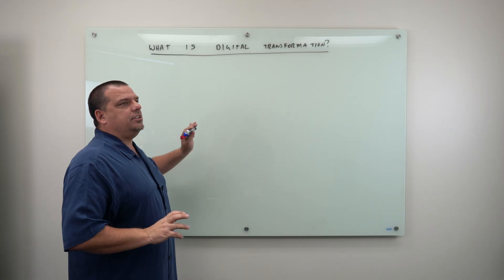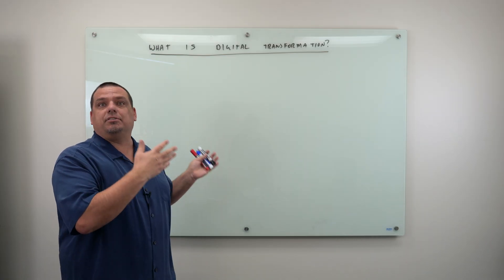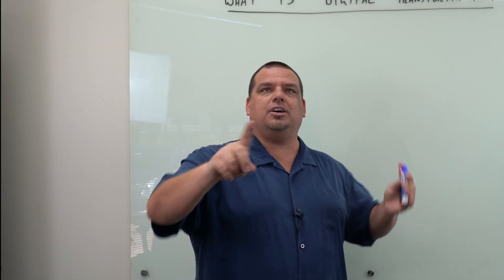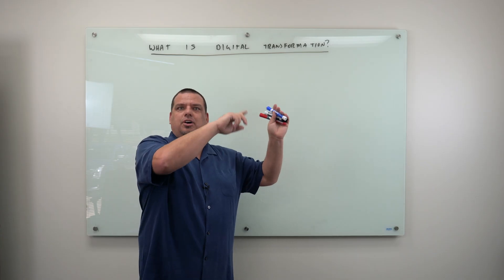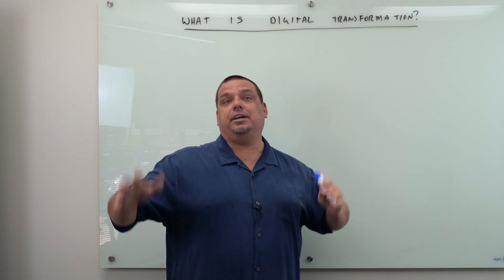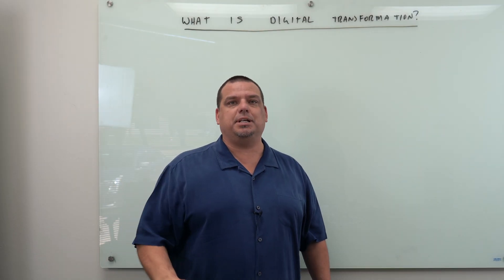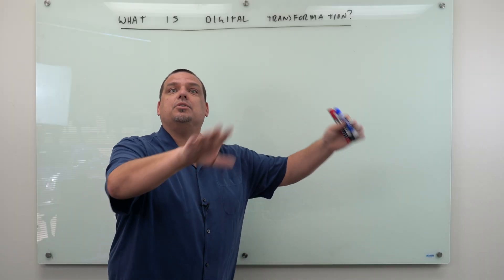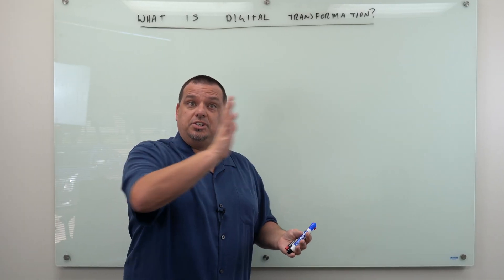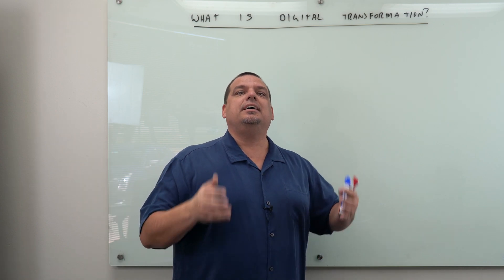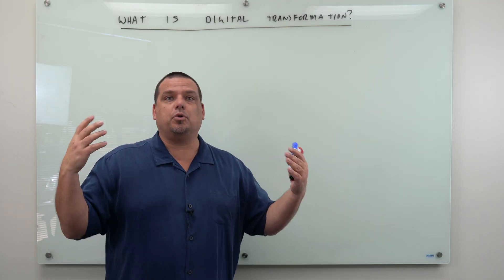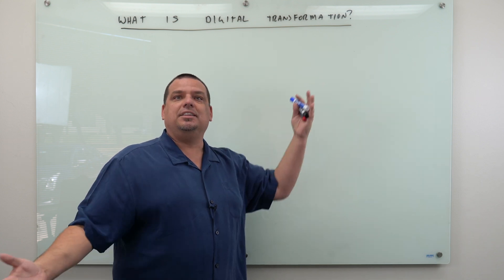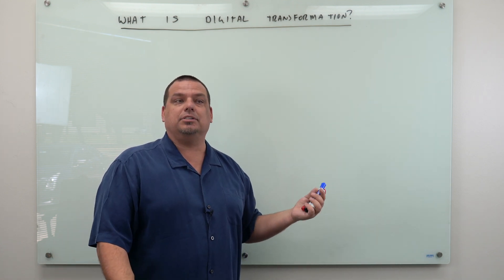We actually never shot a video called 'What is Digital Transformation?' We did a video a couple years ago on the difference between IIoT, Industry 4.0, and digital transformation. In a nutshell, IIoT is the ecosystem that we create when we're digitally transforming an organization. Industry 4.0 is simply the fourth industrial revolution — it's the movement, the time, the place that we're in.